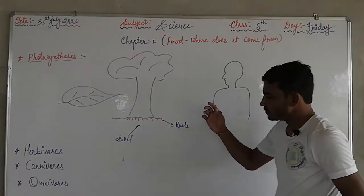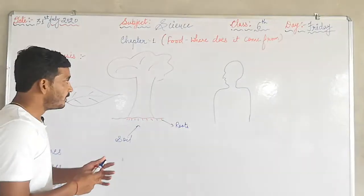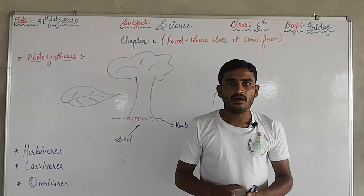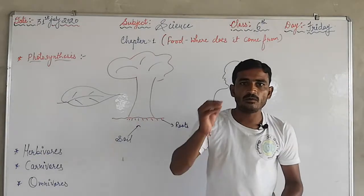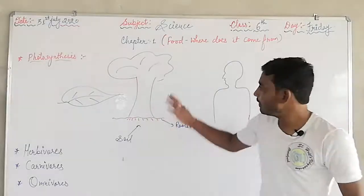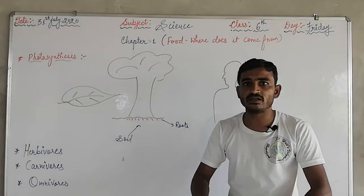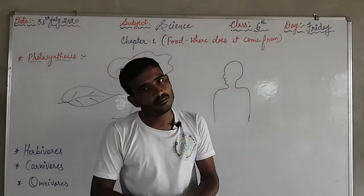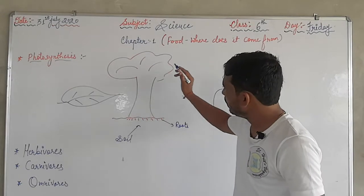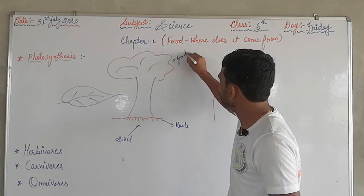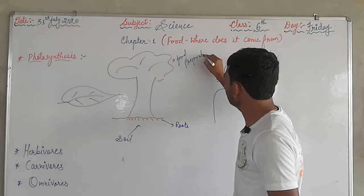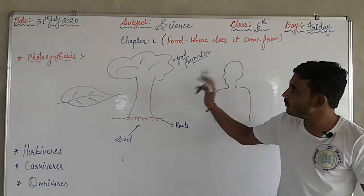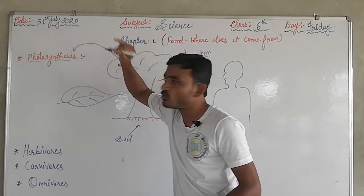First of all, we know very well that only and only plants are there in the whole world which make their own food. Plants are the ones who prepare their own food, and we all depend on plants. Let's talk about food preparation — how does a plant make food? Through the photosynthesis process.